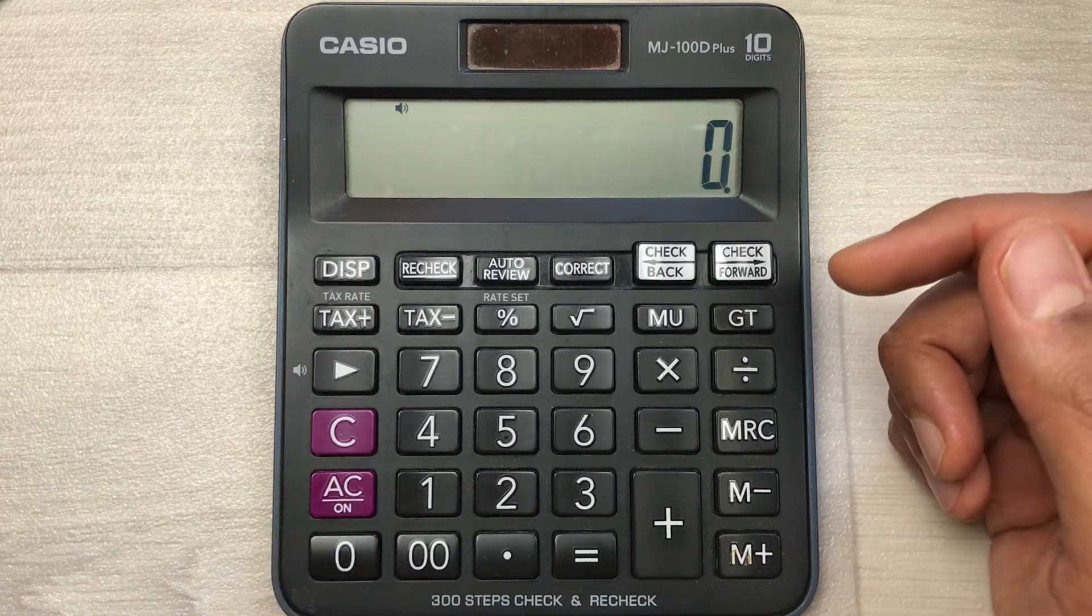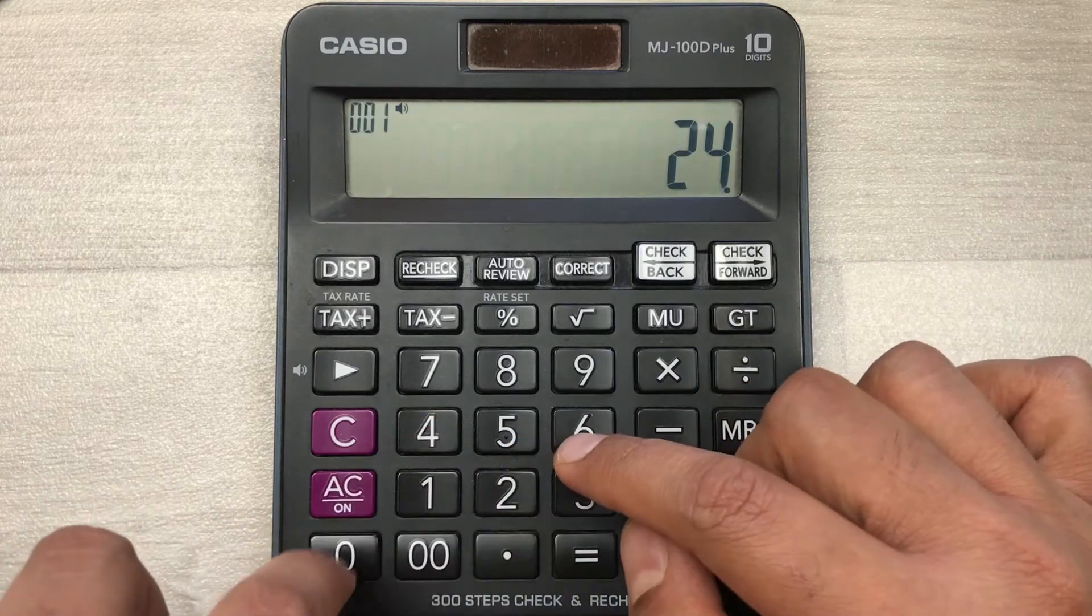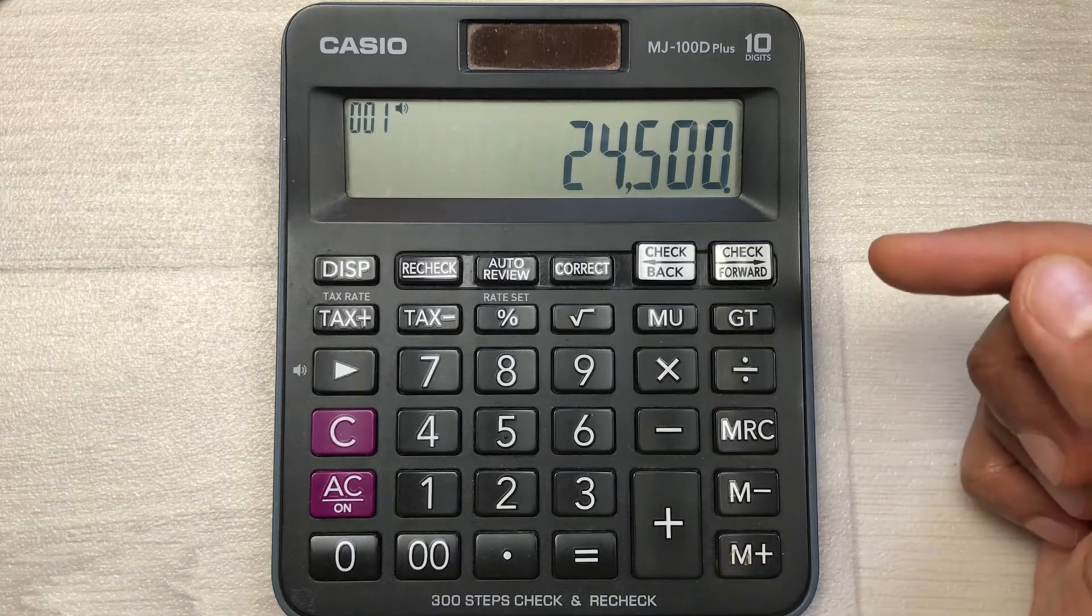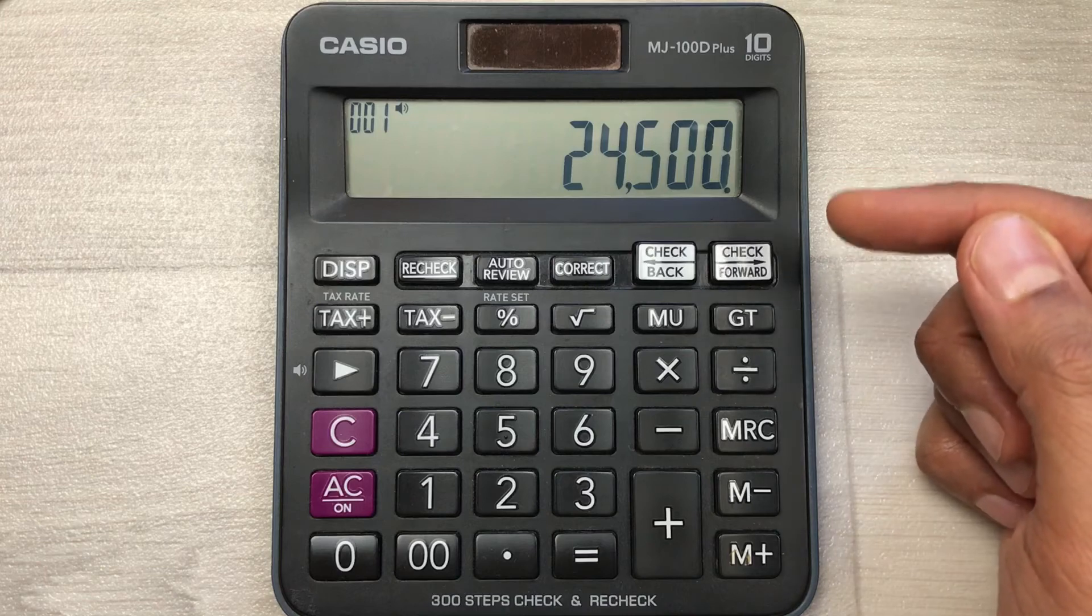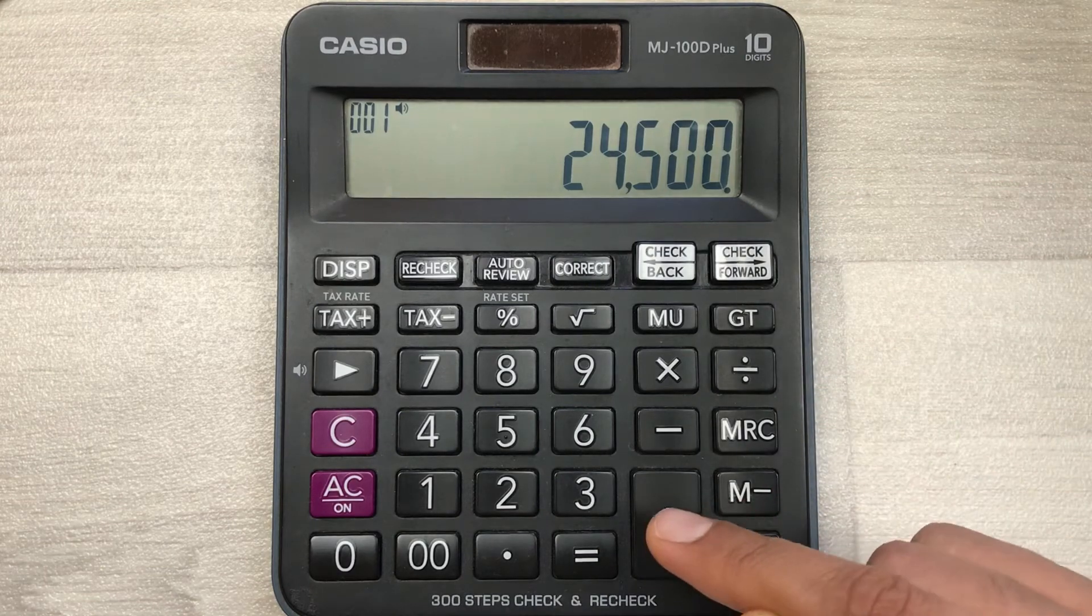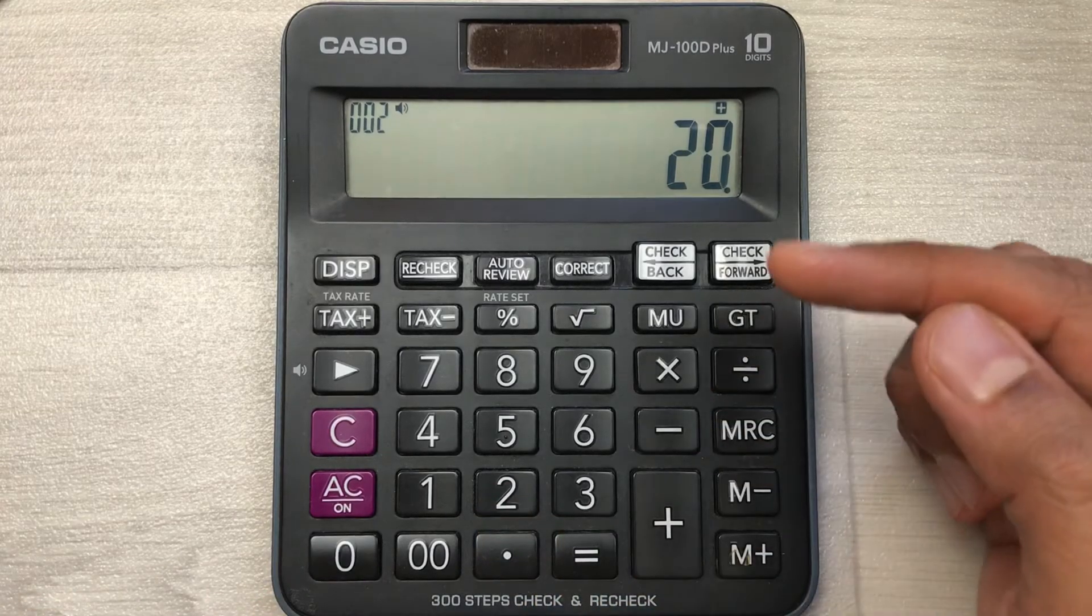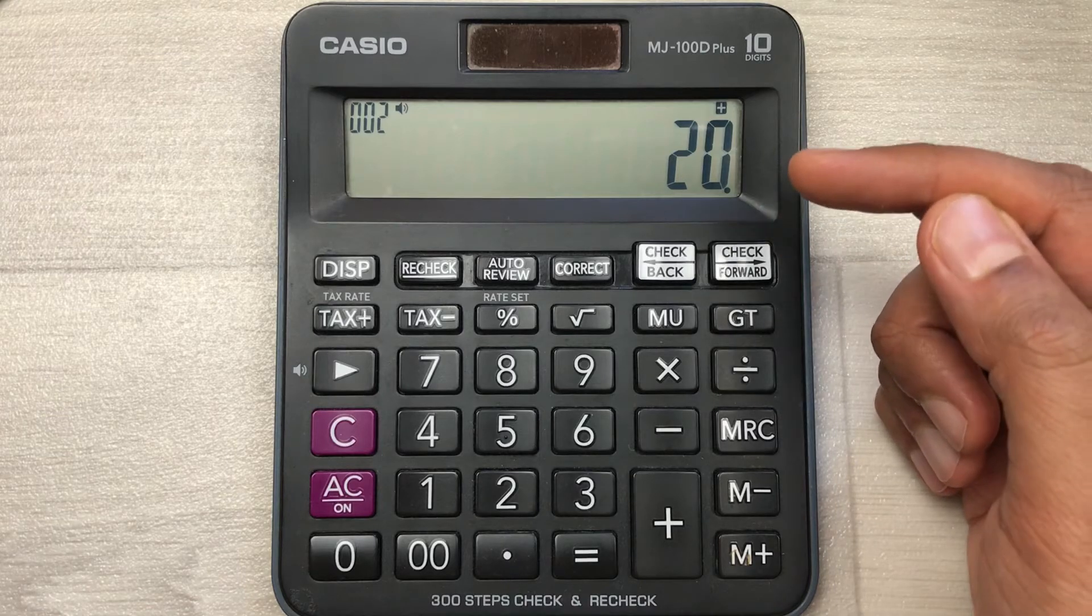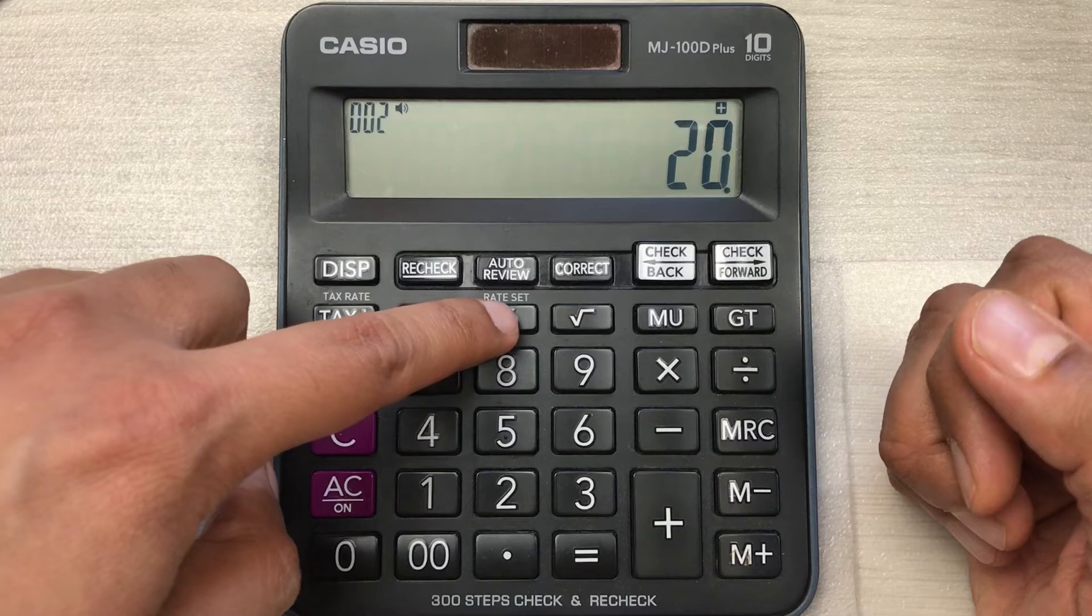Let's move to another example. Let's say we have an item and the price of that item is 24500. Now you want to increase this price by 20%. So what you have to do, you have to press this plus button, then you have to type 20. We are adding this 20 because we want to increase the price by 20%. And then at the end, you have to press this percentage button.